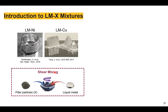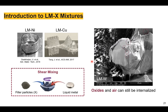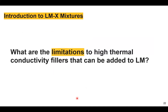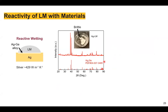These materials are produced through simple shear mixing — dispersing filler particles at the desired volume fraction into liquid metal to form paste or putty-like materials. Because this is a shear mixing process, oxides continue to form and internalize, and air can be trapped as well, as seen in cross-sections of liquid metal and tungsten mixtures. Since gallium has strong reactivity with many transition metals, and many transition metals are high thermal conductivity materials, there are limitations on which fillers can be added to liquid metal.